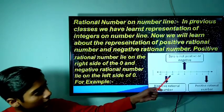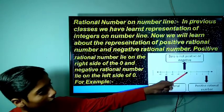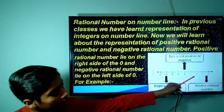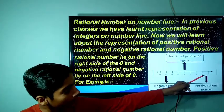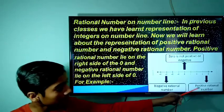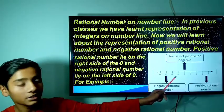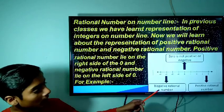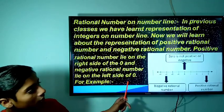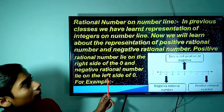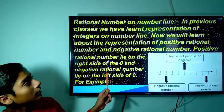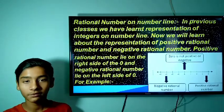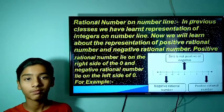For example, you can see here: this is 0, the right side has positive rational numbers and the left side has negative rational numbers. You may now be clear about the representation of rational numbers on the number line. Let's proceed with some practice.